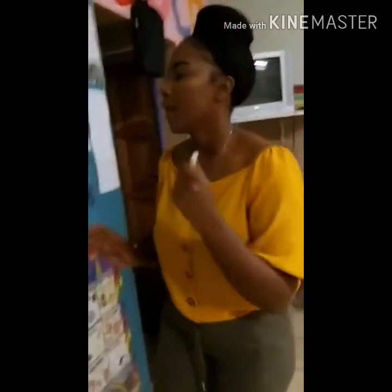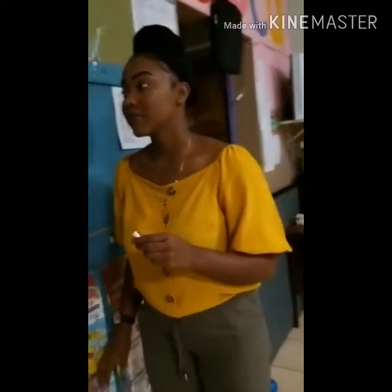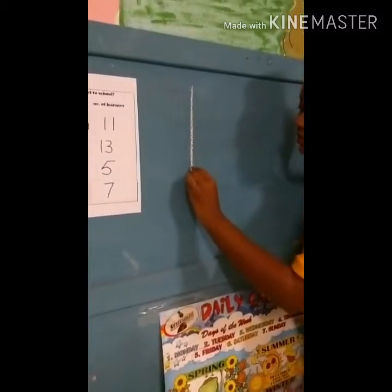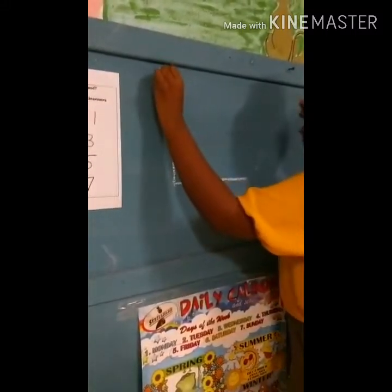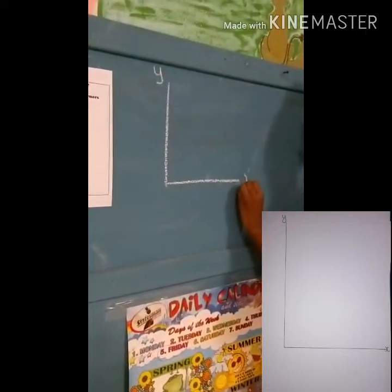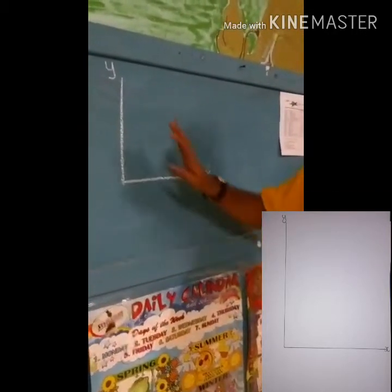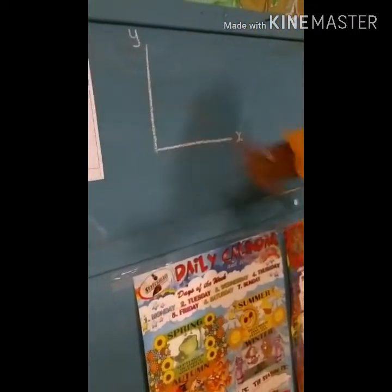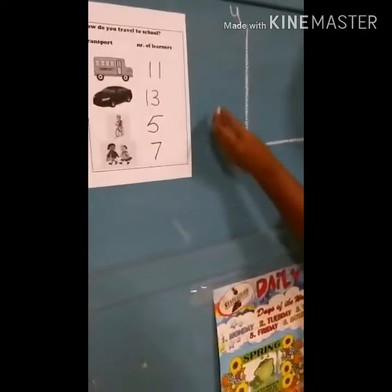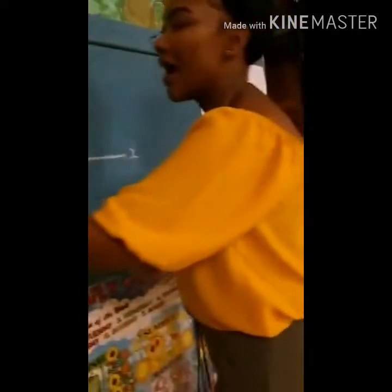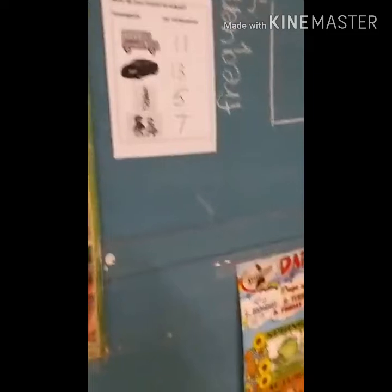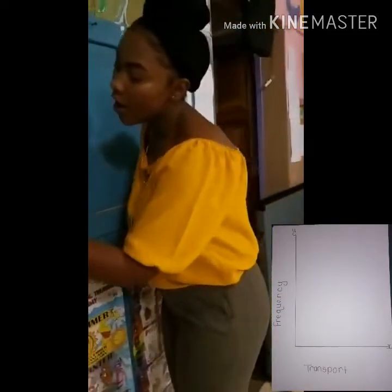Let me tell you what a bar graph is. A bar graph usually has a y-axis and an x-axis. The y-axis will always contain the numbers we have collected — that will always be the frequency. And our x-axis is always what numbers are we using — numbers of what did we collect. We collected numbers of transport, so we write the transport on the x-axis.